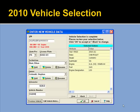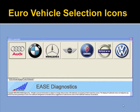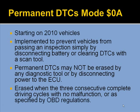We're going to start going through some of the screen series. You can see we just added a 2010 vehicle selection. Again, you can track all that information per vehicle. There are the European launcher items and the permanent DTC mode.